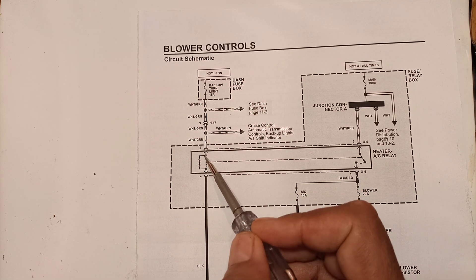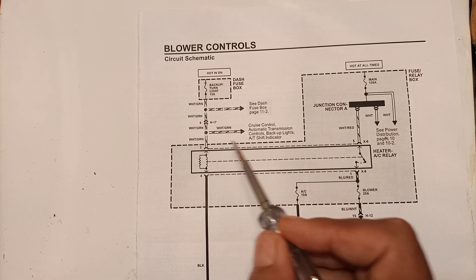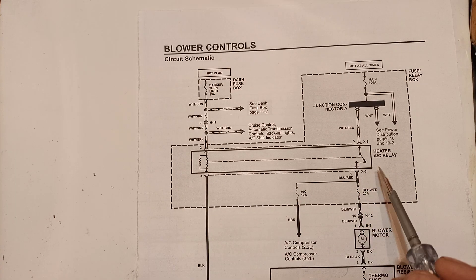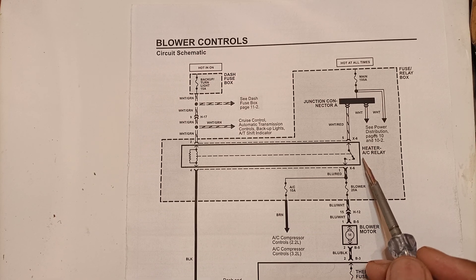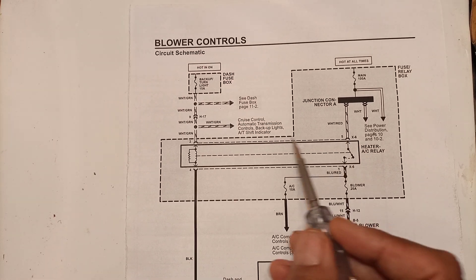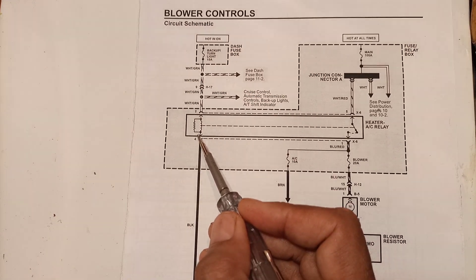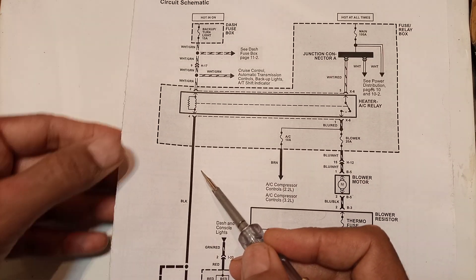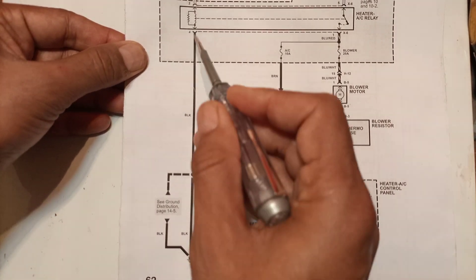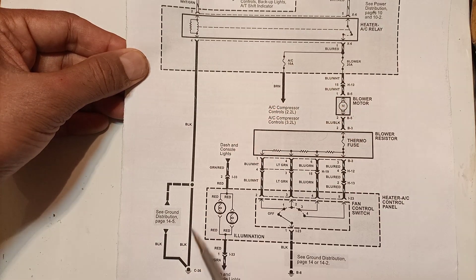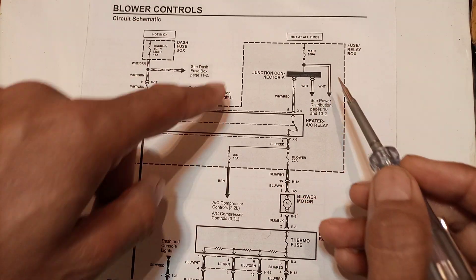This power is applied to relay coil terminal number two. This is the heater AC relay. Power is applied to one side of the coil, and the other side of the coil is connected to ground — as you can see, this is our system ground. So this coil side is connected to ground. This is the control side of the relay.